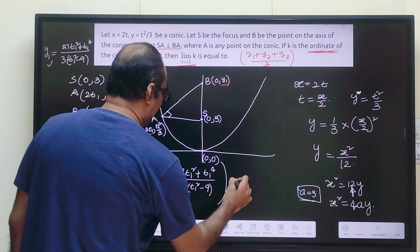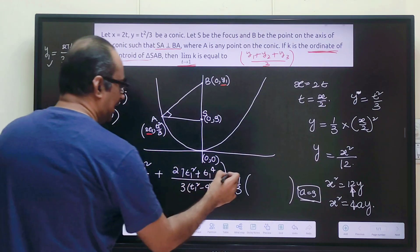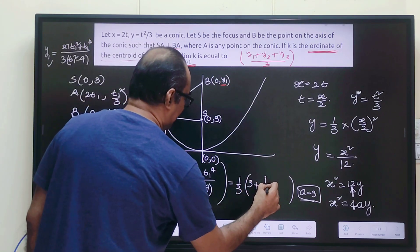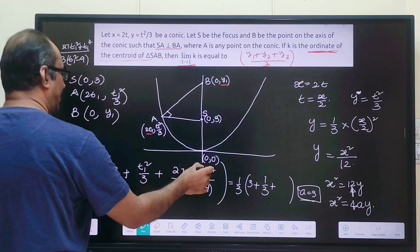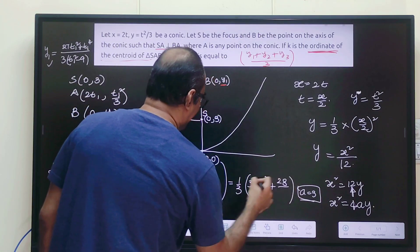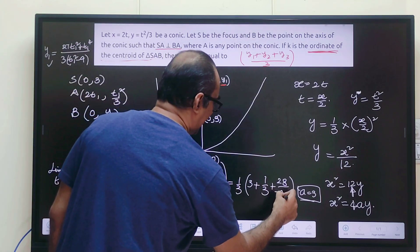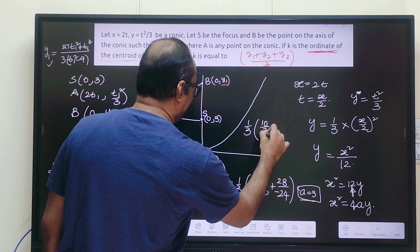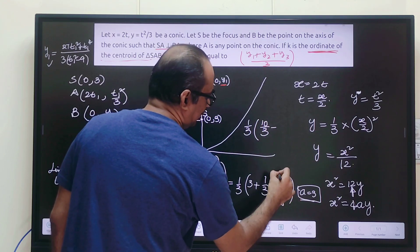That will become (1/3)·(3 + 1/3 + 28/(-24)). This will become (1/3)·(10/3 - 7/2).